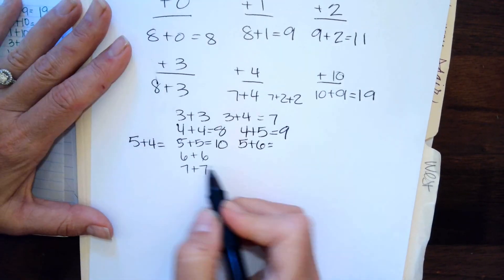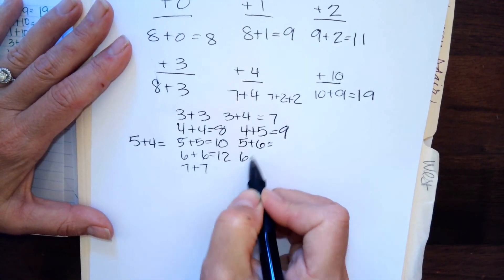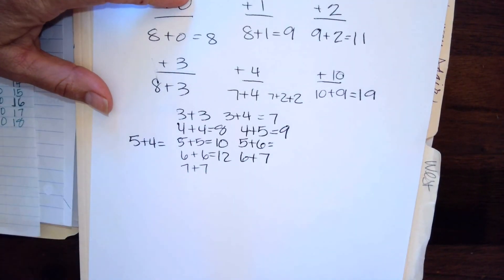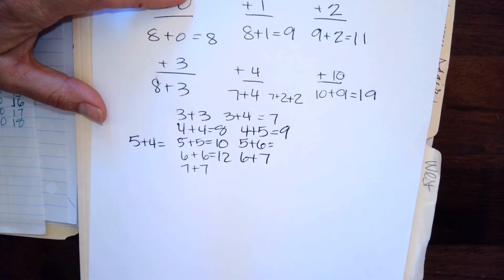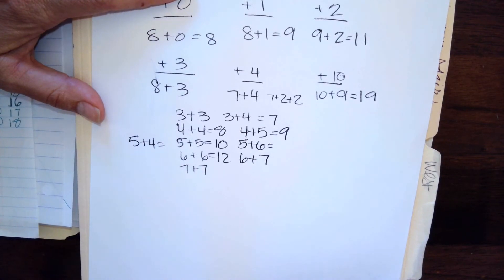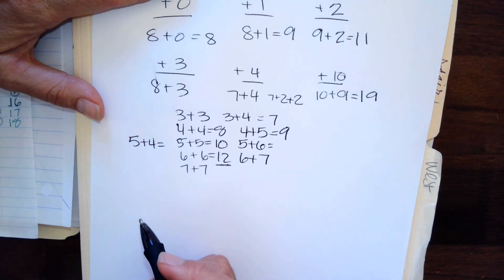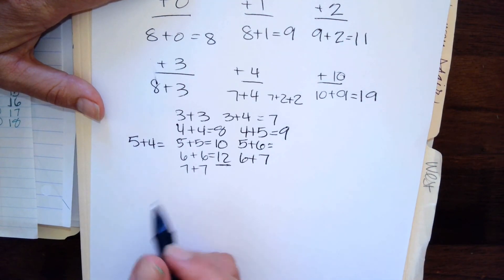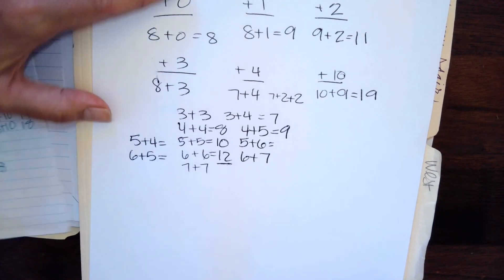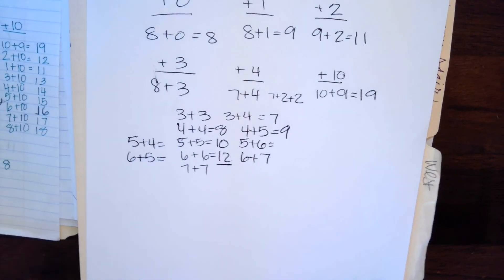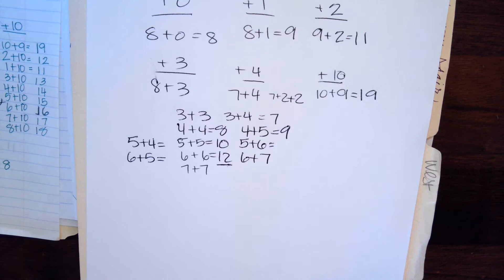Six plus six is twelve, so what is six plus seven? What's one more than twelve? And what's one less than twelve? That's what six plus five would be. One less than twelve is eleven. You got it — kiss your brain! You are smart, you've got a good brain.